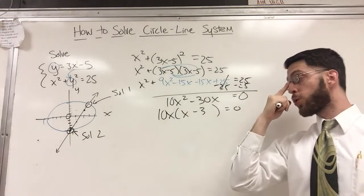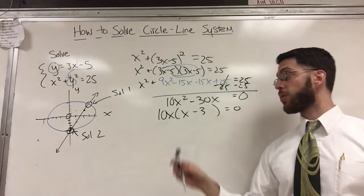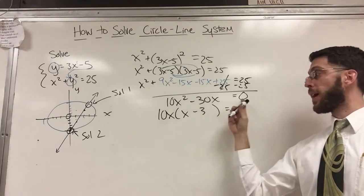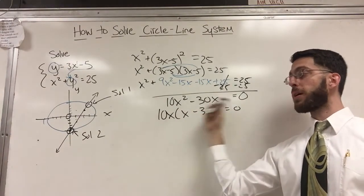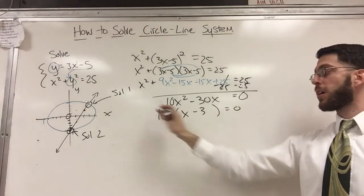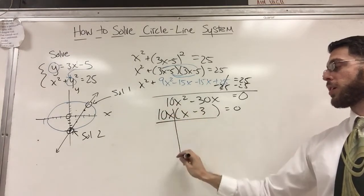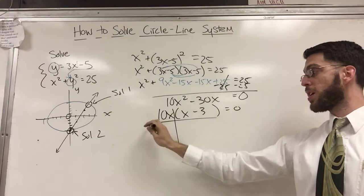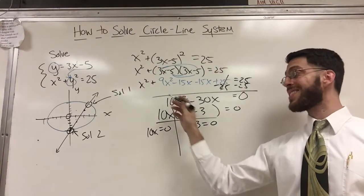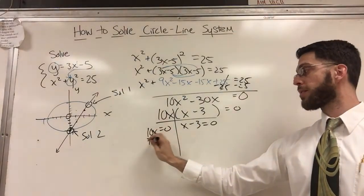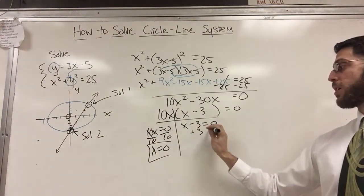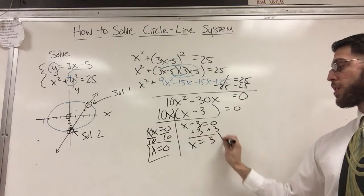At any step you could divide by 10 — dividing both sides by 10 gets rid of that 10, turning this into a 3, and 0 divided by 10 is still 0. Or you can create your t-chart: if something times something equals 0, then either 10x = 0 or x − 3 = 0. From 10x = 0, divide by 10 and x = 0. From x − 3 = 0, add 3 and x = 3. So I got two solutions.